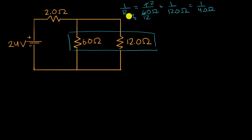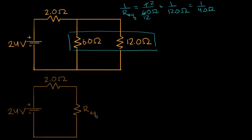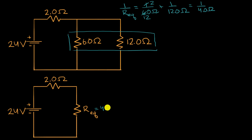Three twelfths is the same thing as one over 4.0 ohms. So one over the equivalent resistance equals one over four ohms, which means the equivalent resistance is four ohms. We can now simplify our circuit by replacing those two resistors in parallel with one four ohm resistor.